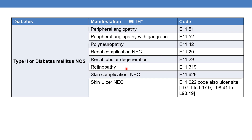For unspecified diabetes mellitus with unspecified retinopathy, the code is E11.319. Other retinopathy codes will be discussed in the next part. For skin complication NEC, the code is E11.628. For skin ulcer NEC, two codes are required: first E11.622, followed by the code for the ulcer site, which comes under categories L97.1 to L97.9 and also L98.412 to L98.49.